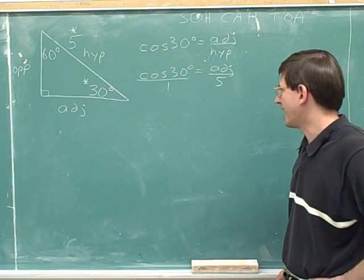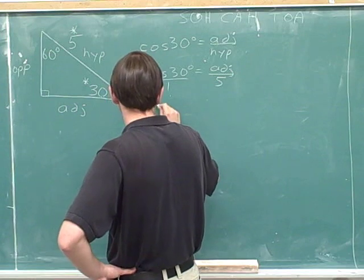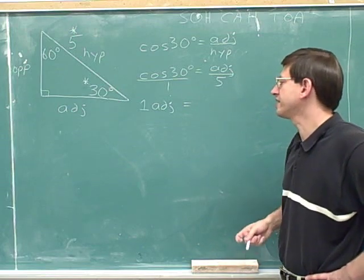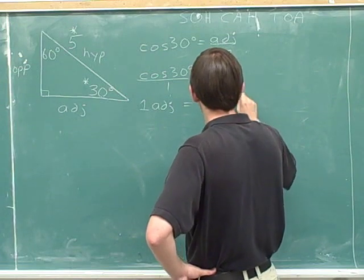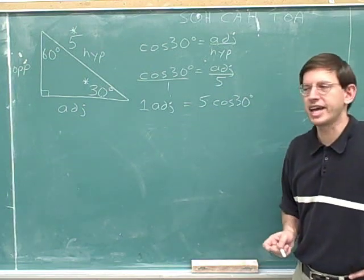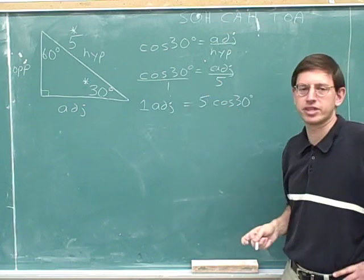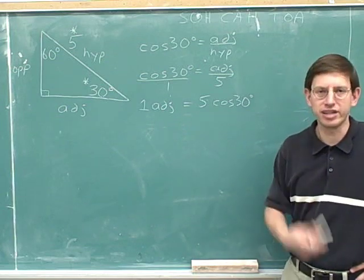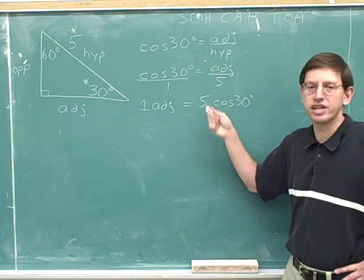Cross-multiplying means multiplying diagonally. Multiplying diagonally one way, we have 1 times the adjacent. Multiplying diagonally the other way, we have 5 times the cosine of 30. So cross-multiplying gives us: 1 times the adjacent equals 5 times the cosine of 30. This is a lot easier to work with because we've gotten rid of all the fractions.